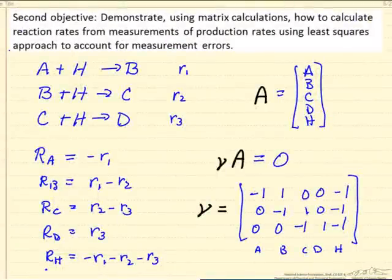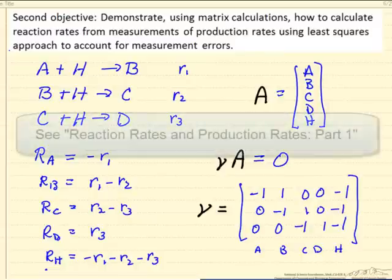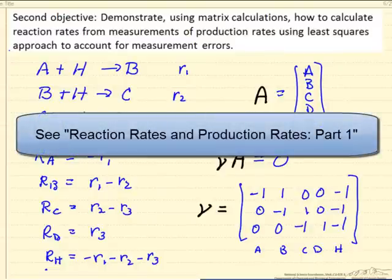In this video I will demonstrate how using matrix calculations we can determine reaction rates from measurements of production rates using a least squares approach. This is explained in more detail in the previous video on this topic.